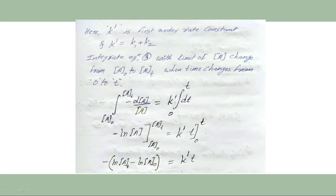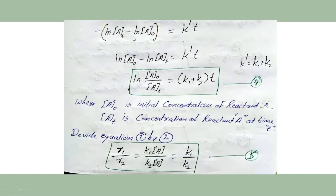Using the logarithm rule ln A − ln B = ln(A/B), and multiplying both sides by −1, we get ln(A₀/Aₜ) = K′T. Substituting K′ = K1 + K2, we obtain equation 4: ln(A₀/Aₜ) = (K1 + K2)T, where A₀ is the initial concentration and Aₜ is the molar concentration of reactant A at time T.